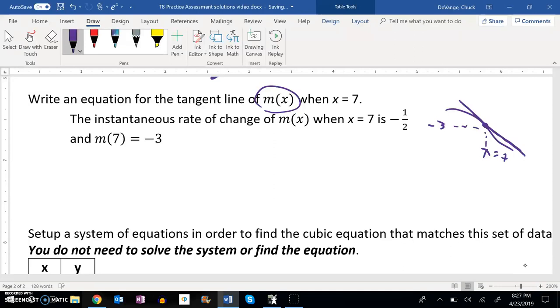And it tells us that the instantaneous rate of change of m of x when x is 7 is negative 1 half. So we know that this little tangent line, its slope is negative 1 half. We also know a point it goes through, we know it goes through 7 negative 3.